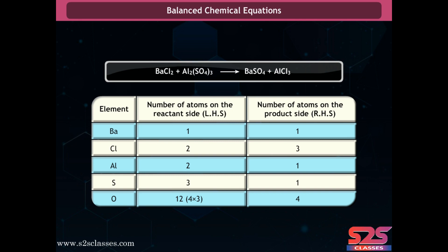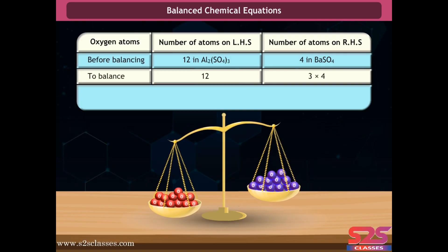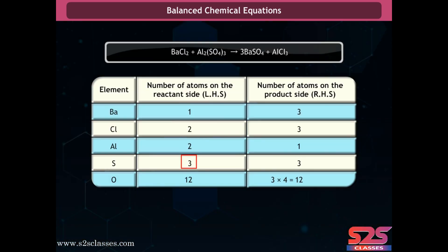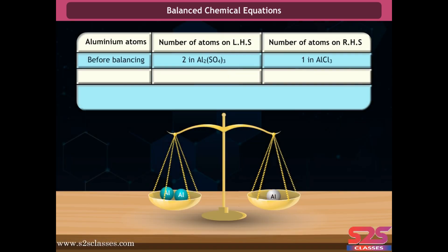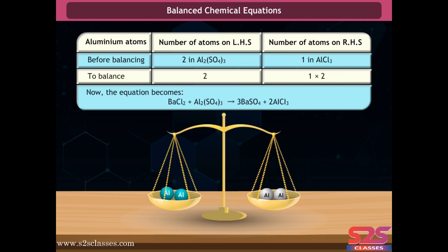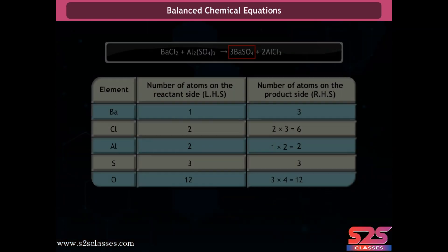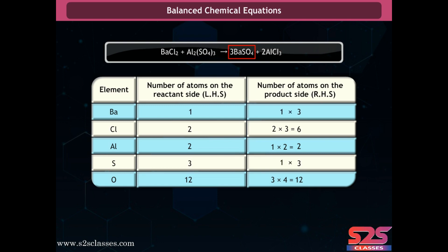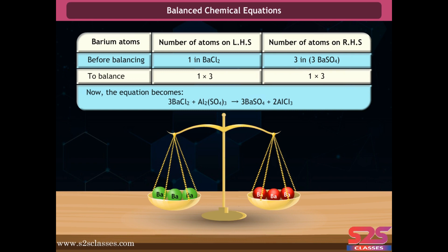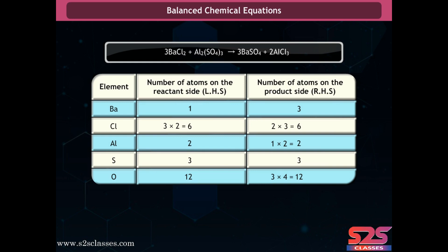Select a compound which contains the maximum number of atoms — in this case, aluminum sulfate, which has two atoms of aluminum, three atoms of sulfur, and twelve atoms of oxygen. From this compound, select the element with the maximum number of atoms present in only one compound on both sides — that is oxygen. To balance the oxygen atoms, multiply barium sulfate on the right-hand side by three, written as 3BaSO4 and not as BaSO4(3).